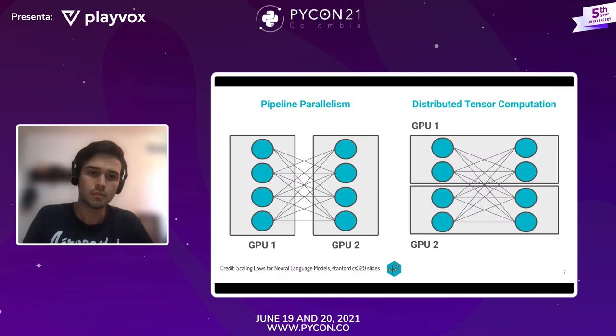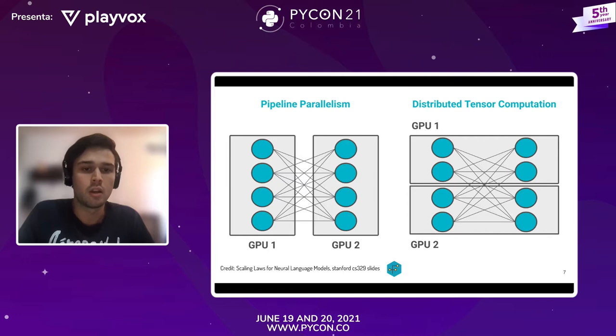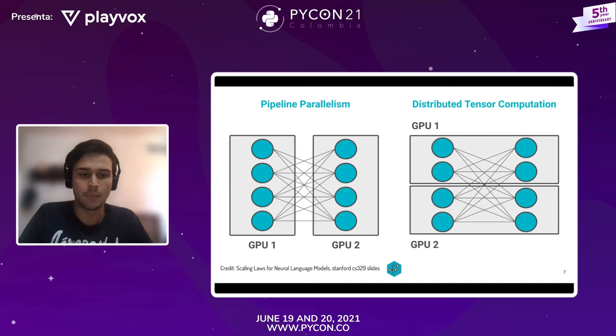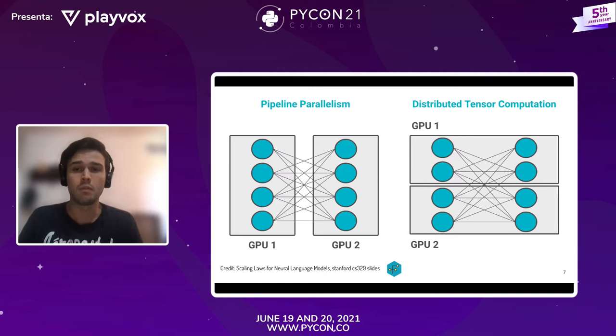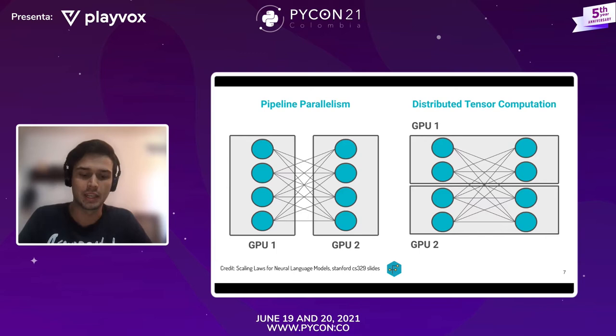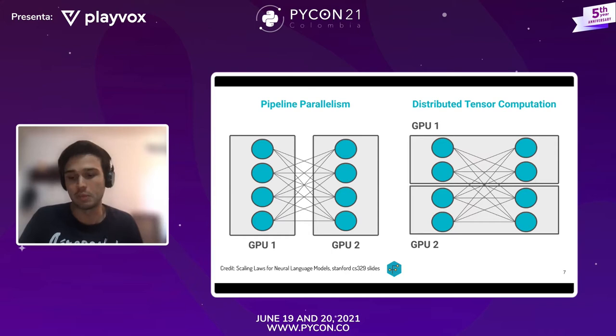Hay dos tipos comunes para hacer esto. Uno es Pipeline Parallelism, en el cual una GPU se encarga de tener ciertas capas del modelo y luego le pasa las activaciones a otra parte del modelo que está en una GPU diferente, y así sucesivamente. La otra forma es un cálculo distribuido de los tensores, en el que una capa está almacenada en diferentes GPUs, entonces para procesar la siguiente capa hay que esperar a que varias GPUs terminen sus procesos.